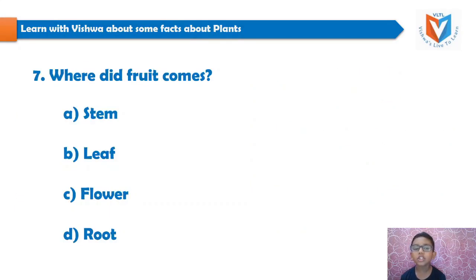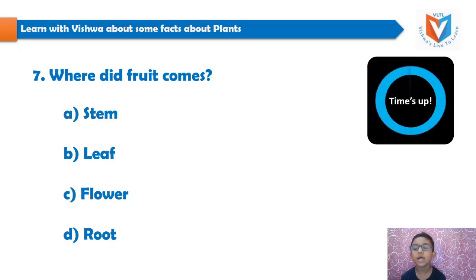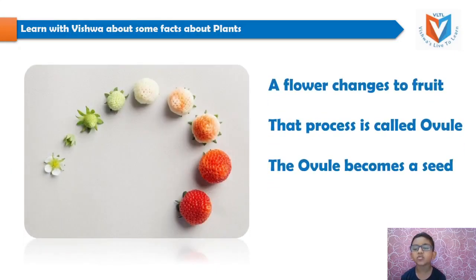And the seventh question is: where did fruit come from? Stem, leaf, flower, root. Your 5 seconds time starts now... time's up. And the answer is flower. A flower changes to fruit. The process is called ovule. The ovule becomes a seed.